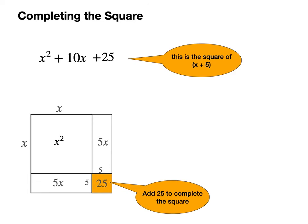Now I'll complicate things a bit by choosing an example where the x term is negative. How could I complete the square for x squared minus 8x?